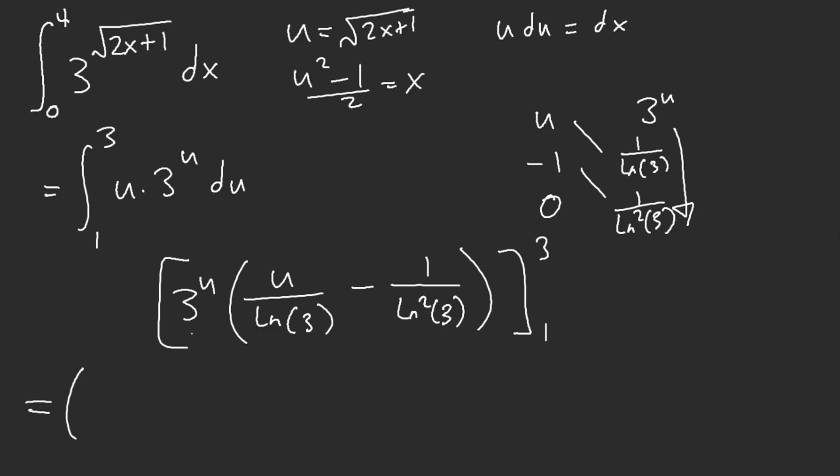Here we have... Let's see. This is 27. We have 27 times another 3. So it's going to be like 81 over ln of 3 minus 27 over ln squared of 3.